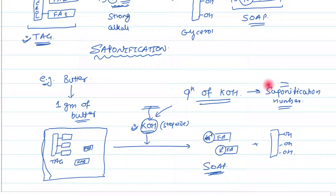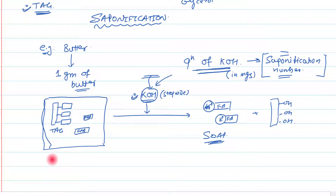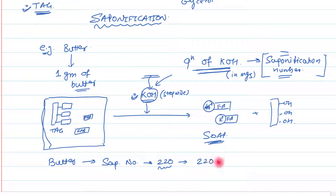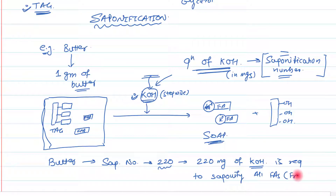If I want to describe the saponification number in one simple sentence: it is the quantity of potassium hydroxide in milligrams which is required to saponify all the fatty acids — whether in free or bound form — from one gram of given fat. For example, in some literature it is written that for butter, the saponification number is approximately 220. This means 220 milligrams of KOH is required to saponify all the fatty acids from one gram of butter.